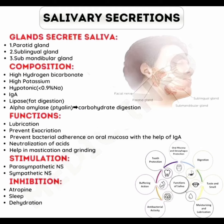Functions of saliva also include prevention of bacterial adherence on oral mucosa with the help of immunoglobulin A, neutralization of acids, and help in mastication and grinding. Stimulation of saliva is carried out by the parasympathetic nervous system and sympathetic nervous system.